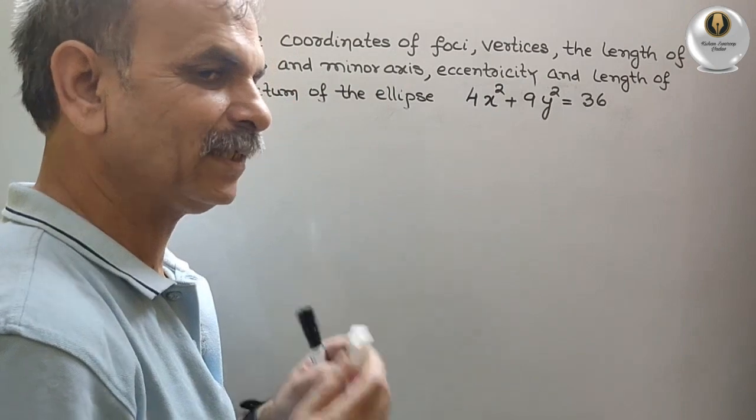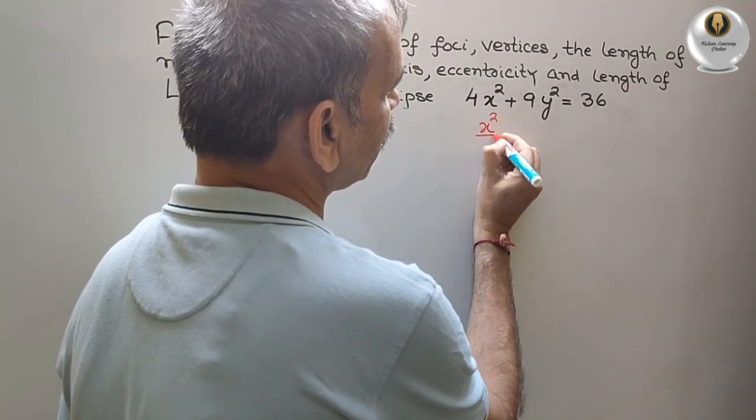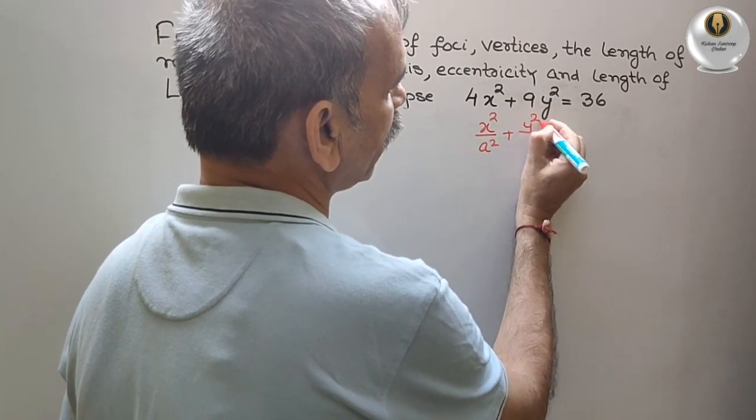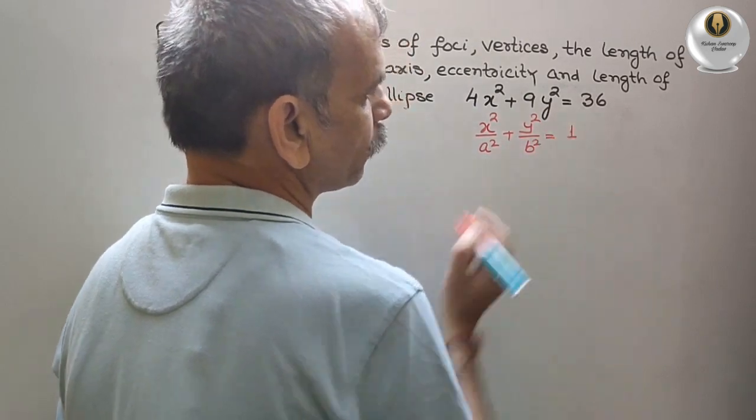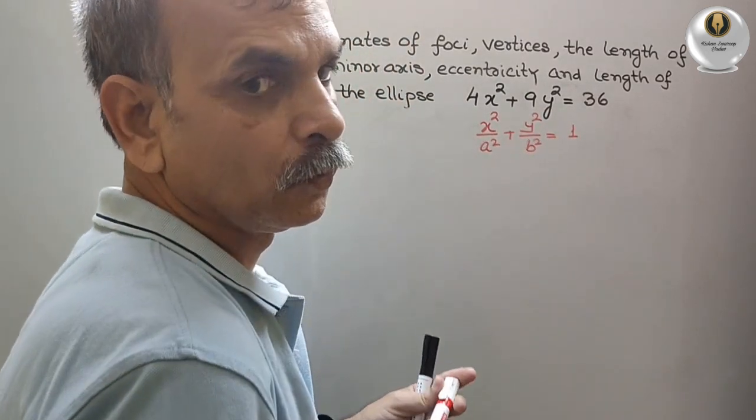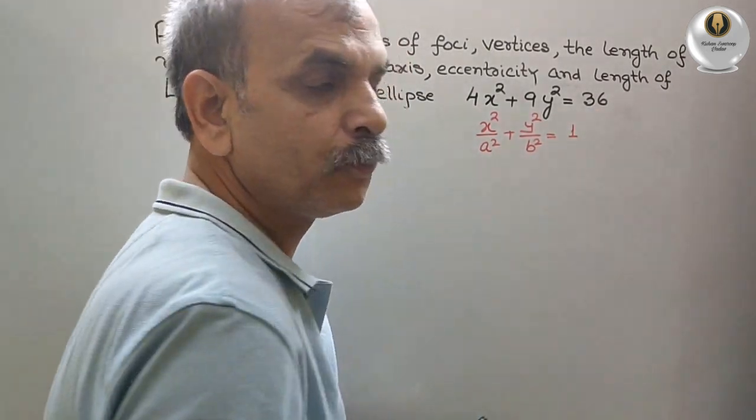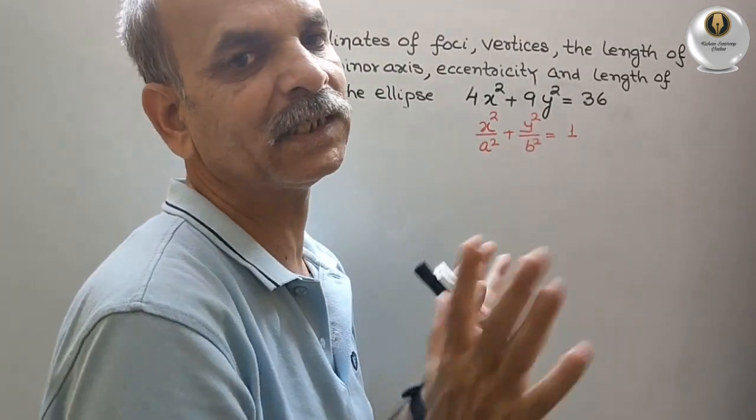So first we will write the standard form. It should be x²/a² + y²/b² = 1. That means, instead of 36, it should be 1. So what we have to do? Just we have to divide full equation by 36.